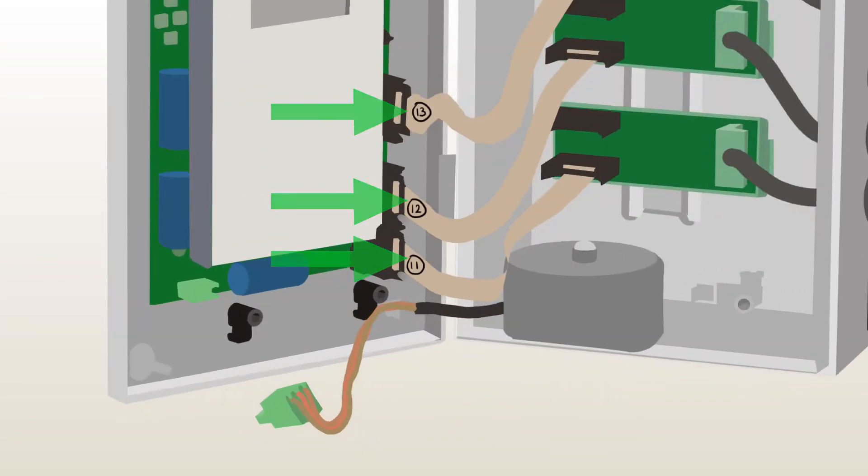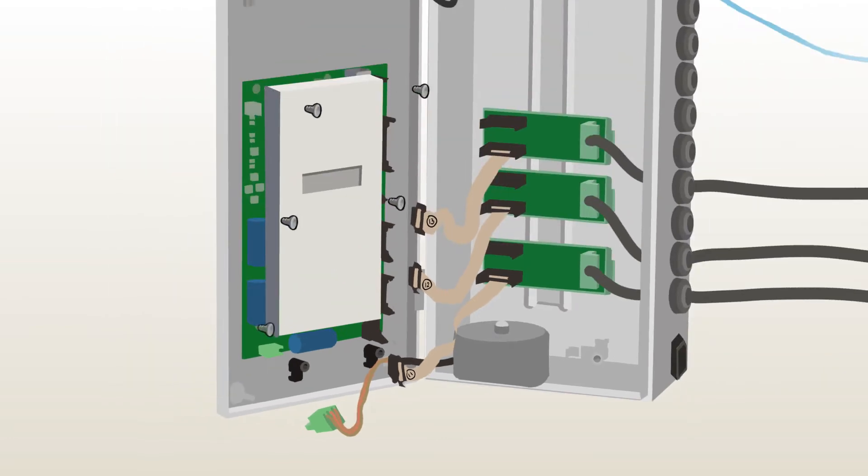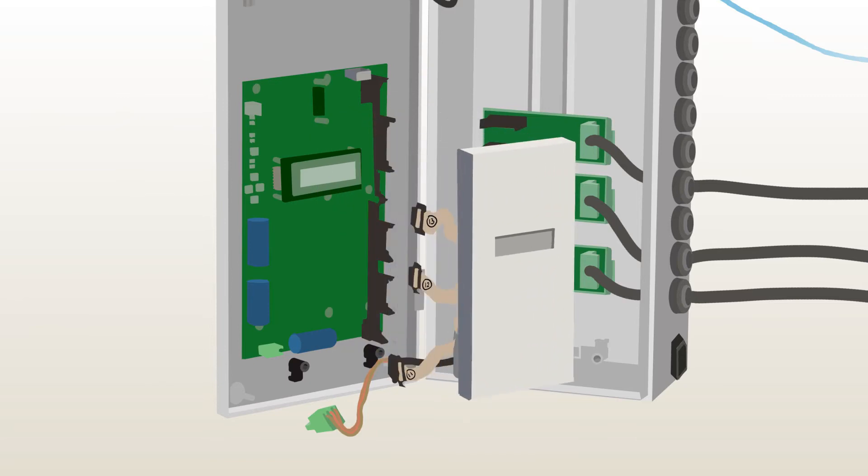Label the individual ribbon cables with the serial port numbers. Remove all the screws securing the panel covering the CPB and then lift it away from the installation.